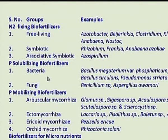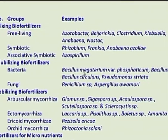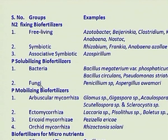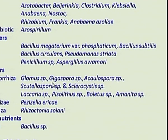Phosphorus-solubilizing bio-fertilizers include bacteria such as Bacillus megaterium var. phosphaticum, Bacillus subtilis, Bacillus circulans, and Pseudomonas striata; and fungi such as Penicillium species and Aspergillus awamori, which are important for solubilizing phosphorus. Some bio-fertilizers mobilize phosphorus in the soil. For example, arbuscular mycorrhizal species such as Glomus, Gigaspora, Acaulospora, Scutellospora, and Sclerocystis species are important for mobilizing phosphorus.